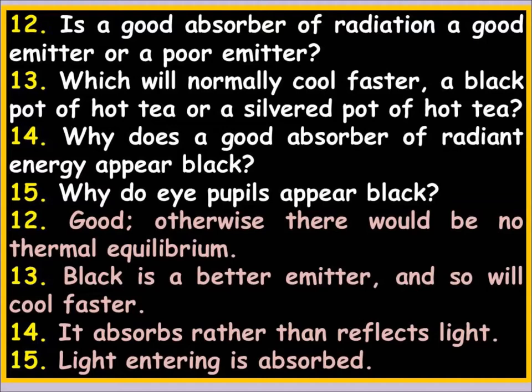Why does a good absorber of radiant energy appear black? Because light is entering and not being reflected back — it's being absorbed like a black hole absorbs light. Your pupil absorbs light going in without it coming back out, so we see black. Something has a color only because it reflects that particular light wave. If it appears white, it's reflecting all light. If only green light is reflected, it appears green. No reflection means black — ROYGBIV or black.